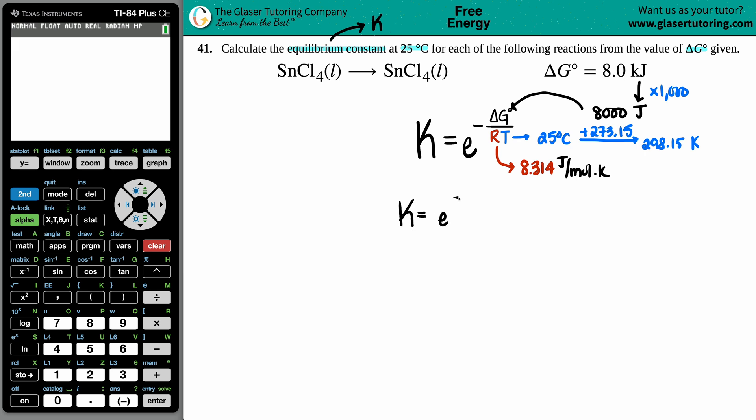K equals the e value on the calculator to the negative fraction. We got eight thousand on the top, and then divided by the two values on the bottom: we got 8.314 and then we have the 298.15.